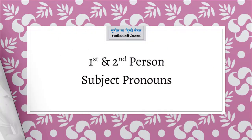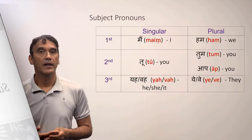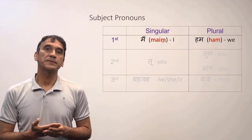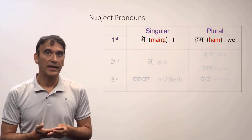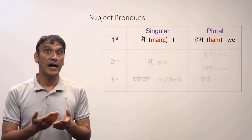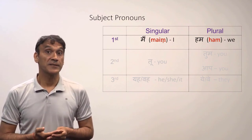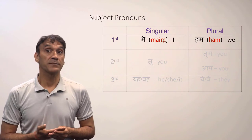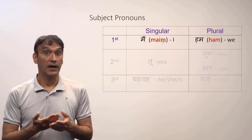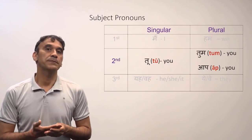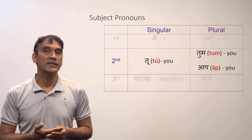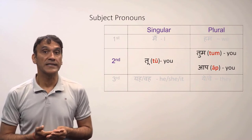The first person singular subject pronoun in Hindi is 'mai,' which means 'I' in English. The first person plural subject pronoun is 'hum,' which means 'we' in English.